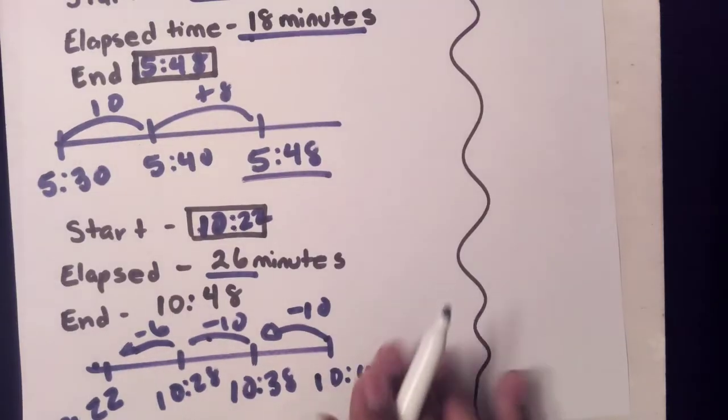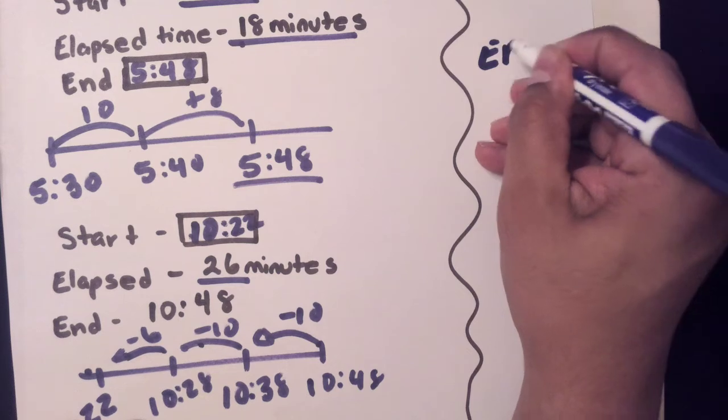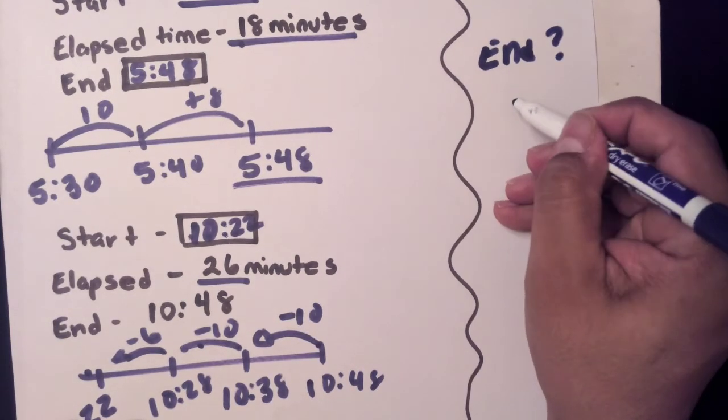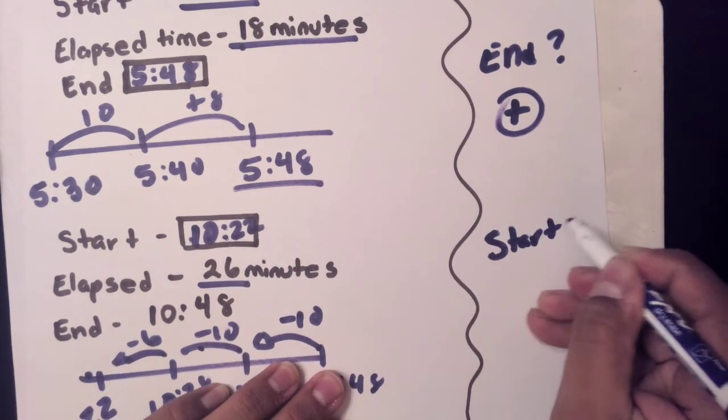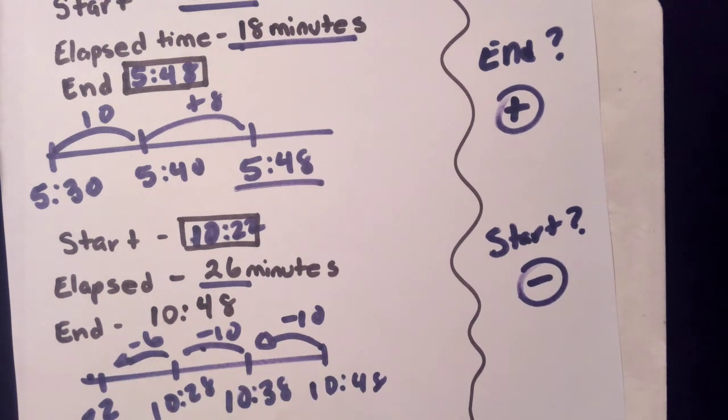So in conclusion, review: when you're missing the ending time, what do you do? You add. But when you're missing the start, you subtract. You take away the elapsed time.